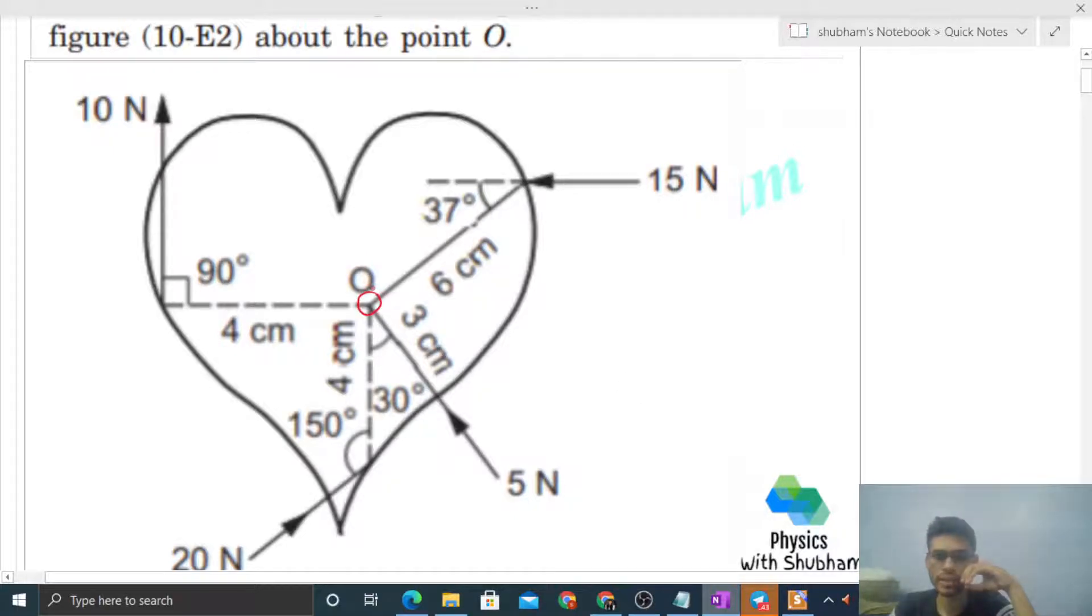So to calculate torque, there are many methods. The simplest method is torque equals r cross F. If I want to calculate the torque for this 15 Newton force, then first I need to define a position vector.